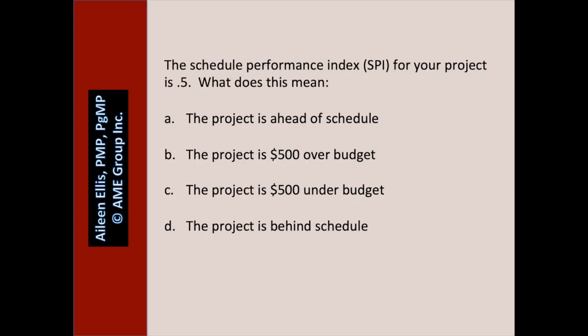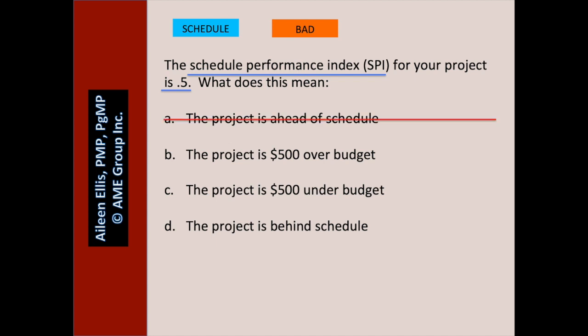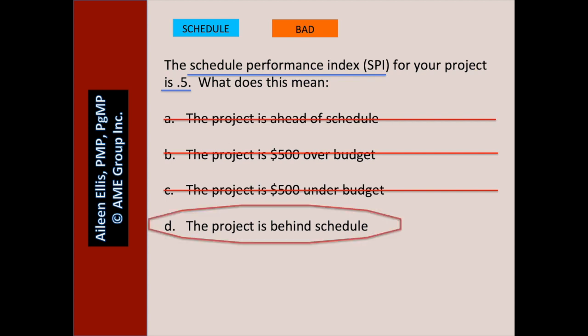Schedule performance index for your project is 0.5. What does this mean? Pause the video and answer the question. Is this about schedule or cost? It's about schedule. And is this good or bad? This is bad because it's less than 1. A: the project is ahead of schedule — no, because the index is less than 1, so the project is behind schedule. B: the project is $500 over budget. C: the project is $500 under budget — we don't know because we have schedule performance index, not cost variance. D: the project is behind schedule — that's the best answer.